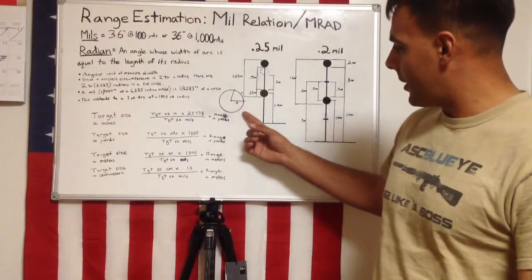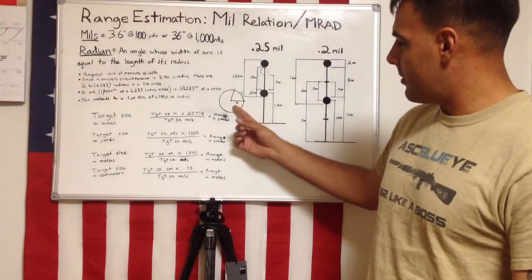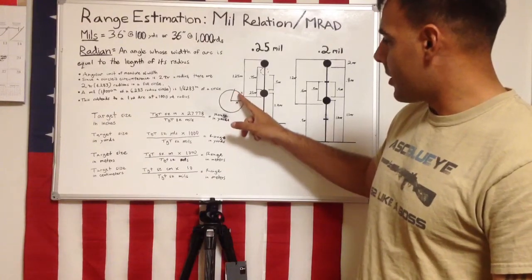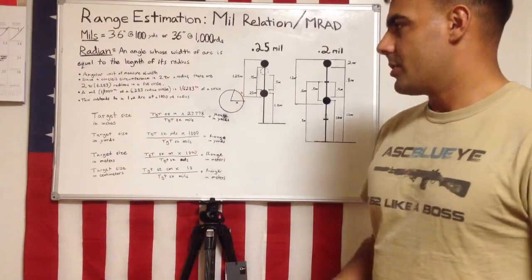So if I look at the circle here, my radius is measurement X, that means the width of arc that it covers is also X. So in a full circle...